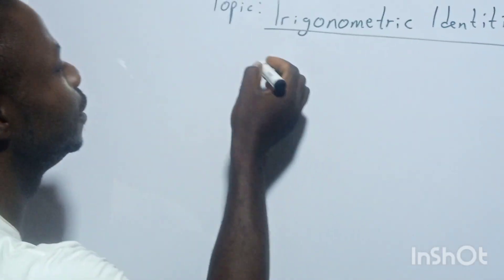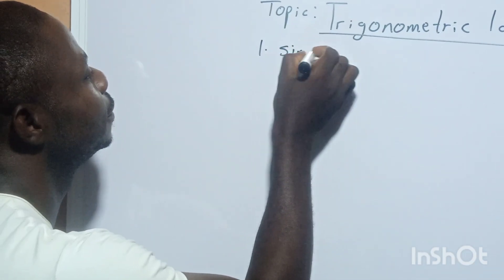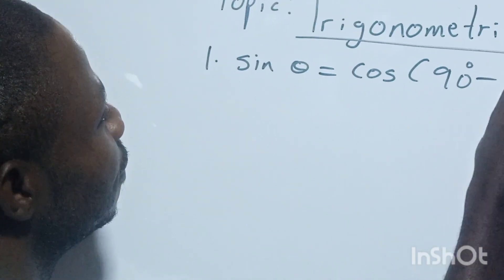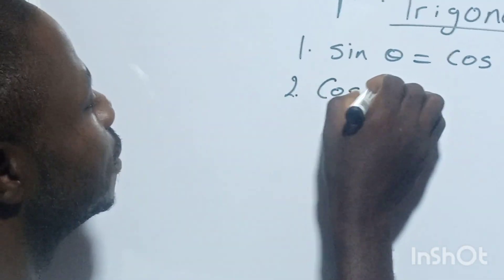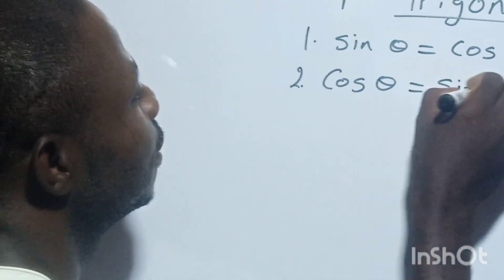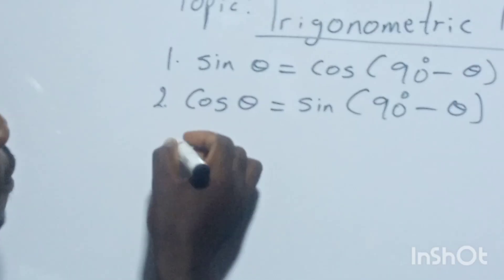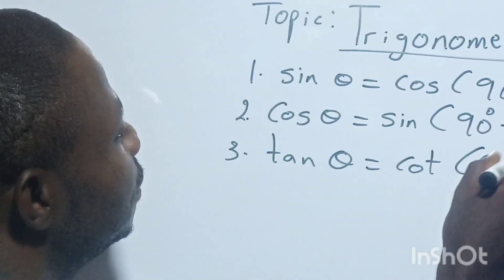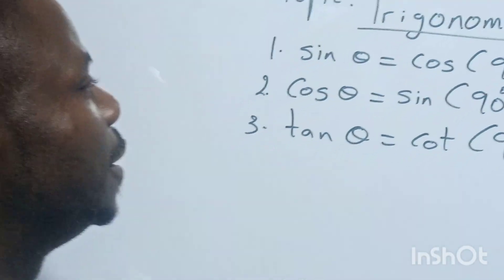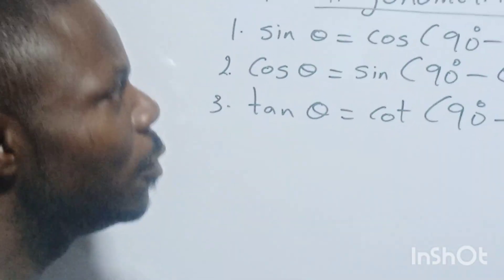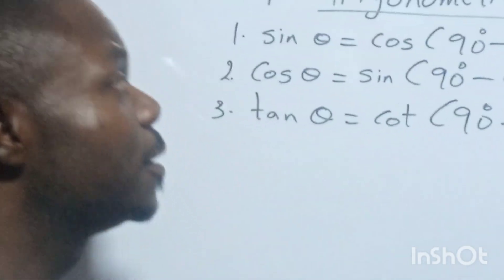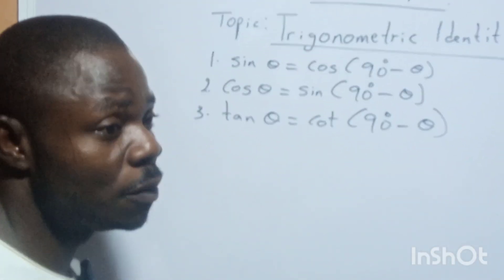The first identity we shall look at is: sin θ equals cos(90° − θ). Two: cos θ equals sin(90° − θ). Sin θ equals cos(90° − θ). These are identities. What is an identity? An identity is a unique expression you can use to solve another problem, especially when you are facing another problem in the world of mathematics.